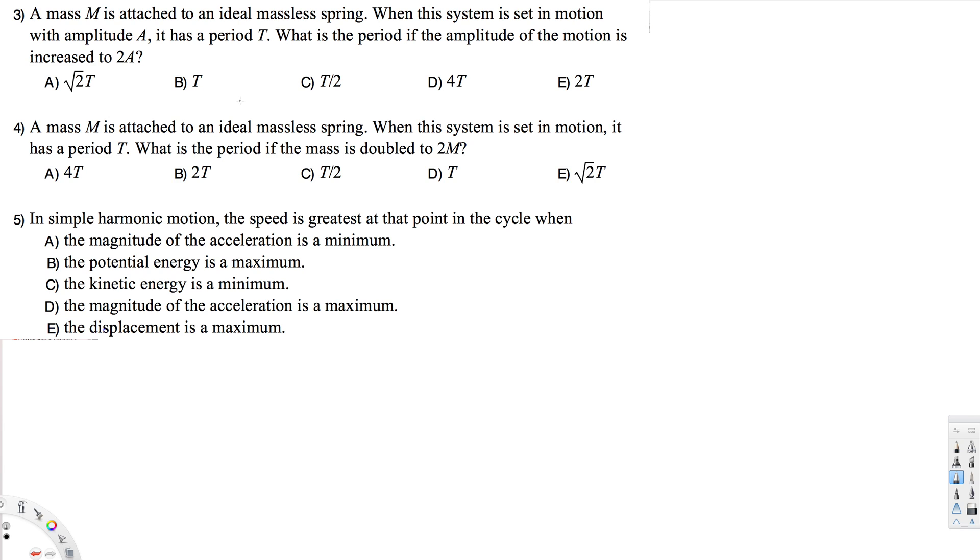If you look at the equation for the period, there's nothing related to amplitude. For example, T = 2π√(m/k). This depends on the mass and the spring constant. T is what we're trying to find, but mass, spring constant, and omega = 2πf don't involve amplitude.